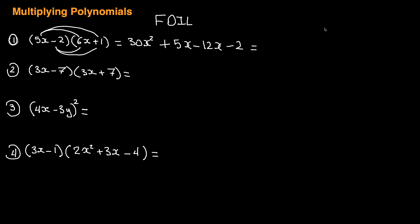Now, you don't stop here, because we have like terms. If you remember from last session, 5x and negative 12x are like terms. So therefore, we go 30x squared, and we have 5 minus 12, which is negative 7x, minus 2. And that's the answer for the first one.